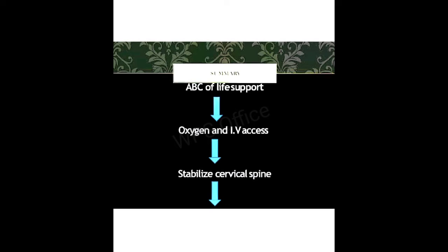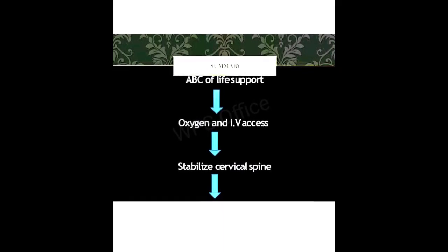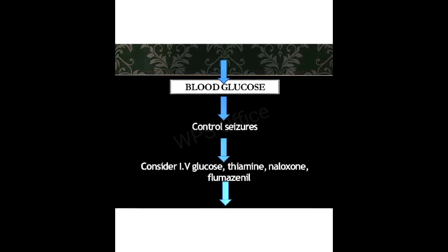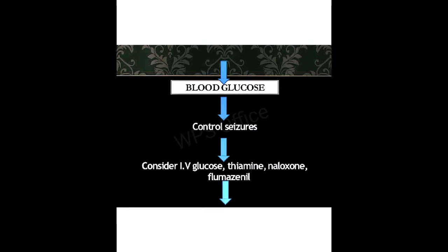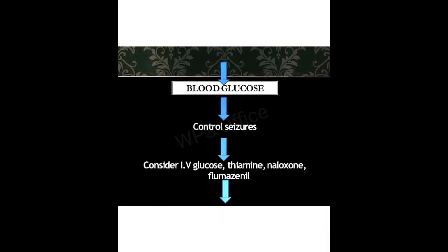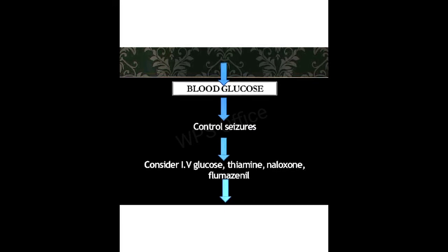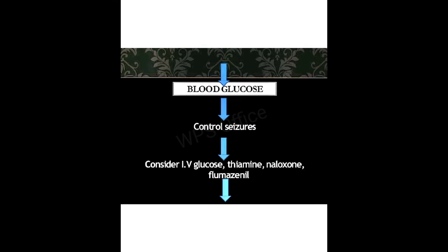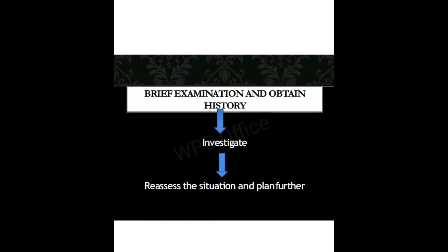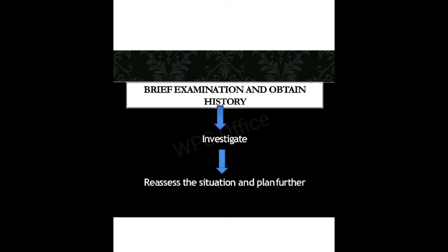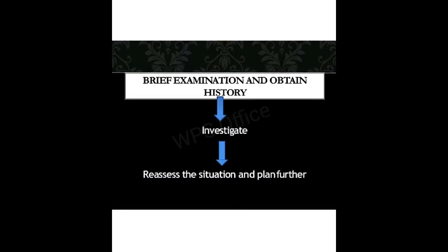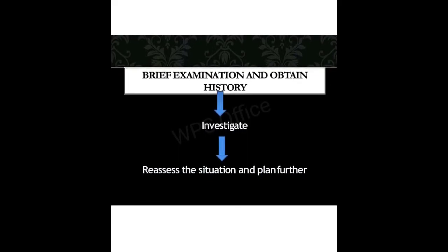In the management summary, first airway, breathing, and circulation support is given. Then oxygen and IV access are provided, and the cervical spine is stabilized — meaning the neck region should be kept straight. Blood glucose level is assessed to determine if IV glucose is needed. Seizures are controlled with appropriate medications. IV glucose, thiamine, and naloxone are considered. Then physical examination including GCS is performed, history is obtained, and investigations such as CT scan, MRI, blood tests, angiography, ventriculography, and EEG are sent.